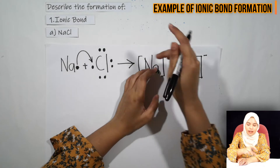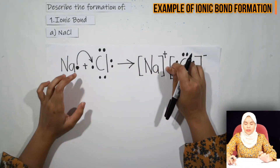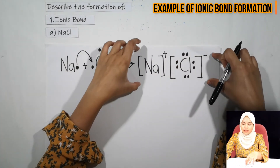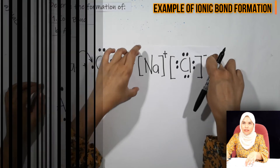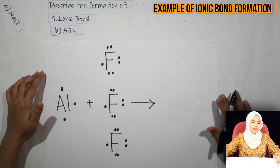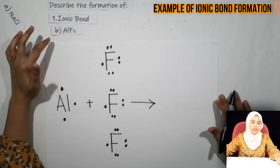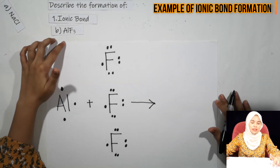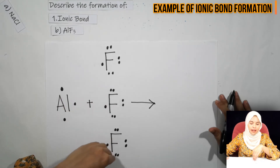Tak perlu nak letak plus sign kat sini. Okay, this is the ionic bond formation. So let's go through the next example in ionic bond, which is AlF₃. Dekat AlF₃ ni, kita ada element Al and 3 element F.